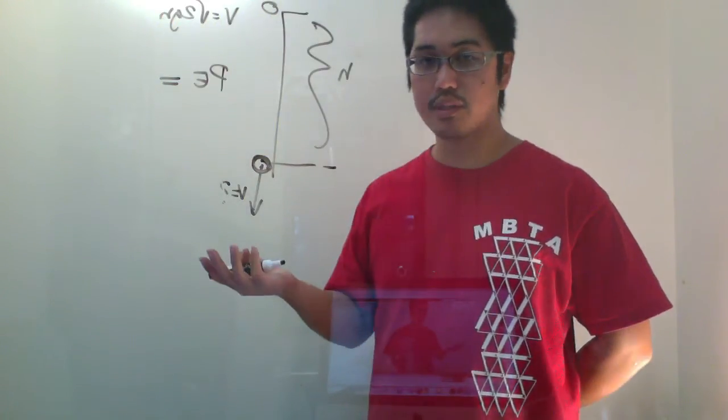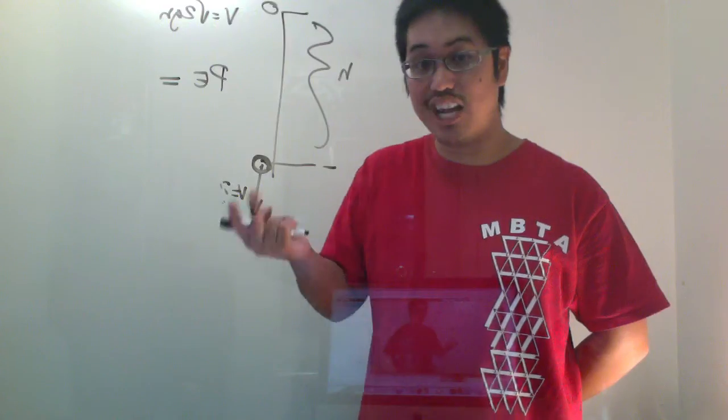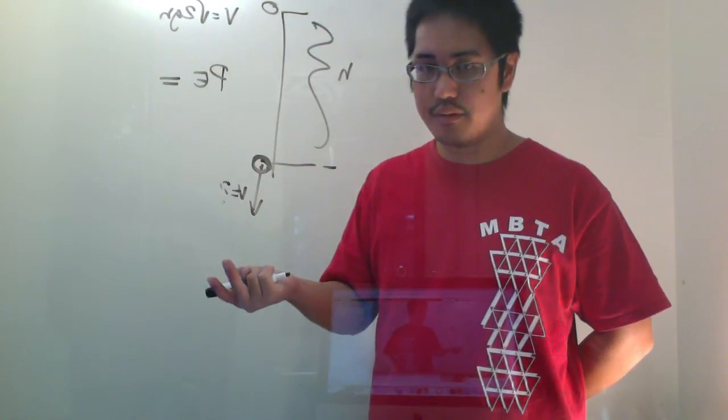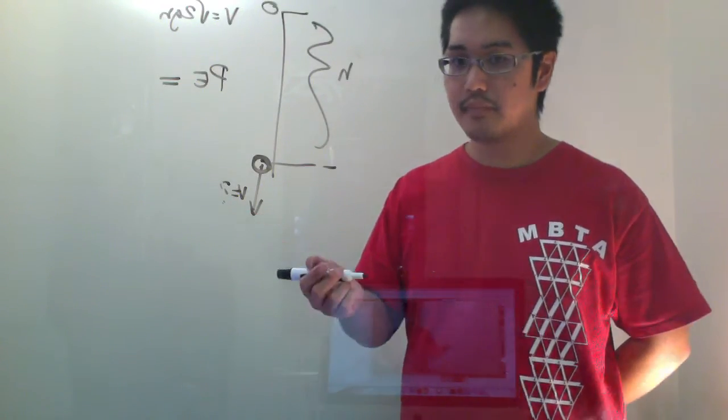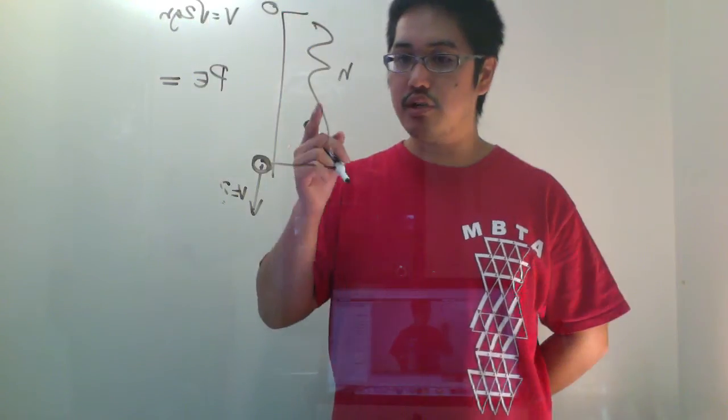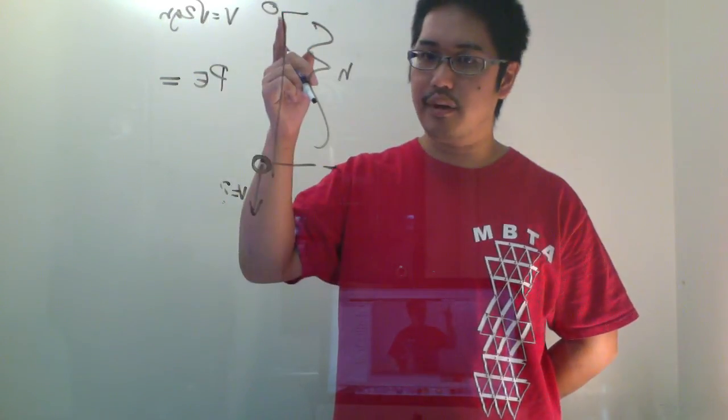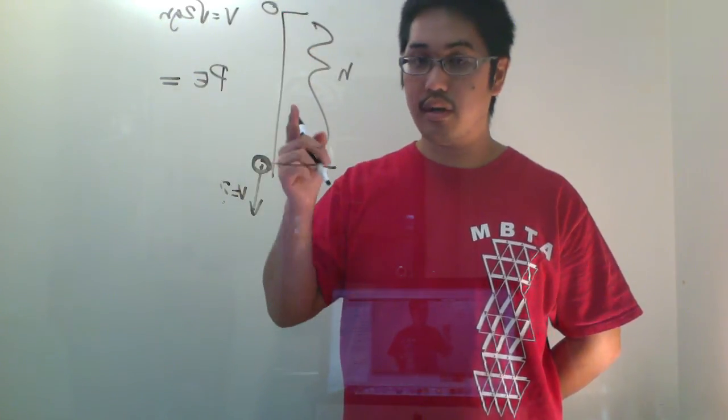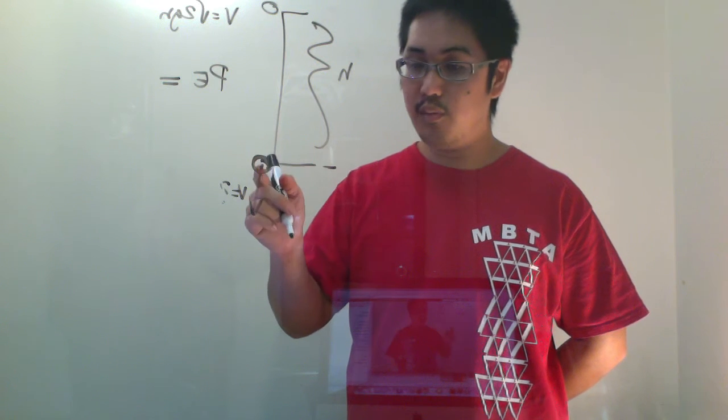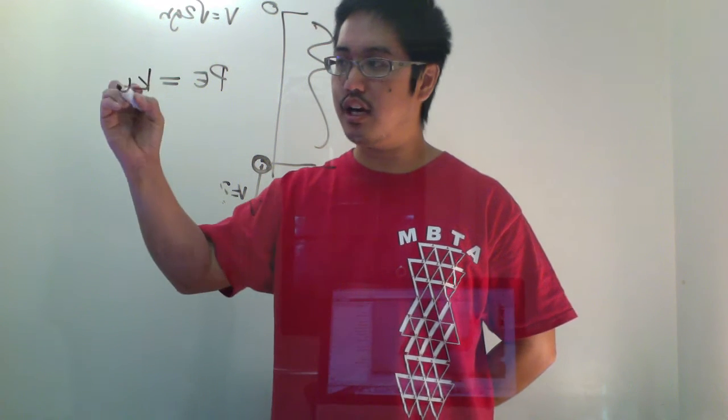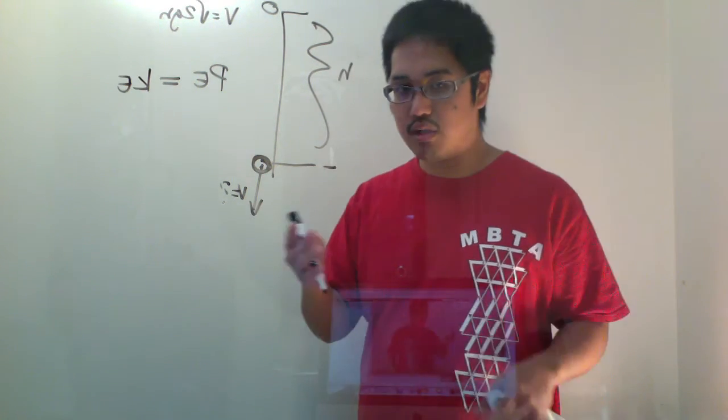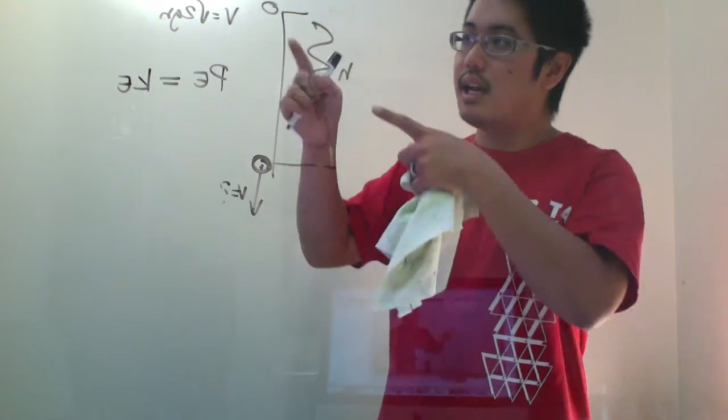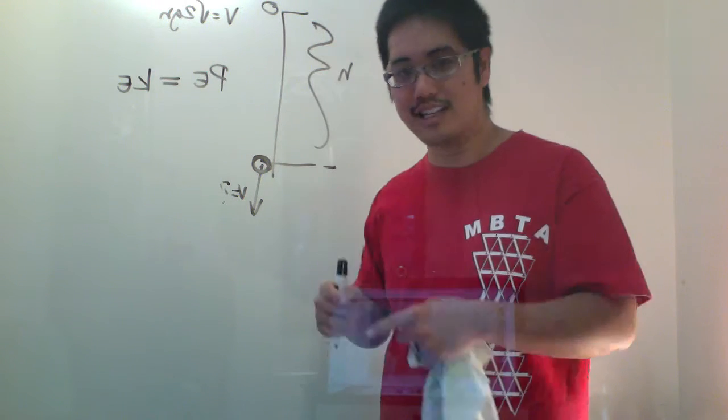Well, if the equation for potential energy is mgh and h equals zero, then it has no potential energy. Right? So where did all that energy go? It went into moving the ball. So it has kinetic energy down here. I'm looking at two different pictures. At the beginning, it has potential energy. At the end, it has kinetic energy.